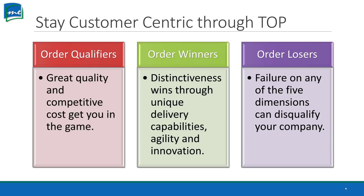Order qualifiers — great quality and competitive cost — get us in the game. When you look for certain products, you might check several retail establishments and see the same product in multiple places. What makes you buy from one place versus another? It might be cost, delivery time, or the ability to pick it up in person. You need to make it easy to get qualified, win their dollars, and be the order winner — have that distinctiveness to win.